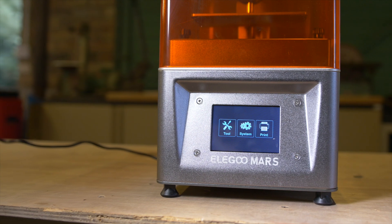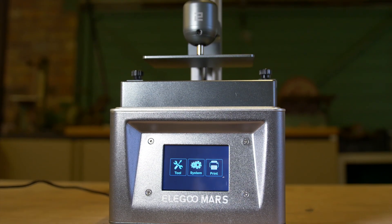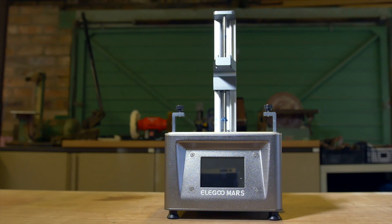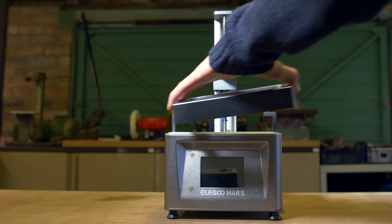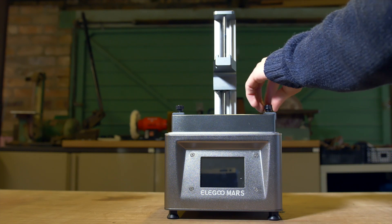The Mars is a compact desktop 3D printer. It's controlled via a color touchscreen and the included USB flash drive. It's small enough to fit on your desk or into small spaces and the UV blocking cover is easily removed to allow quick access to the machine.